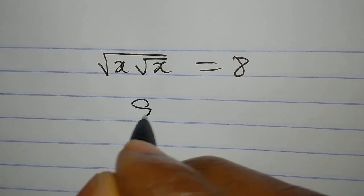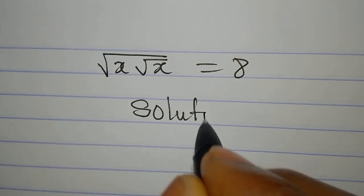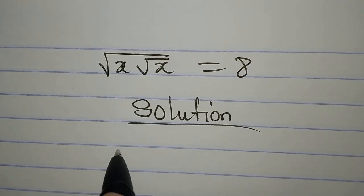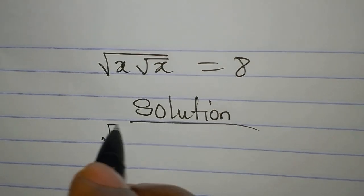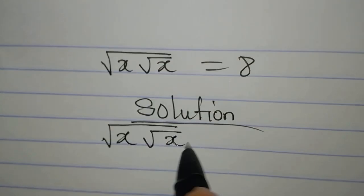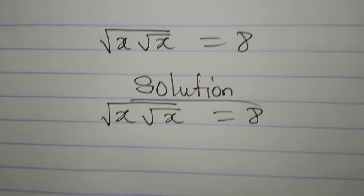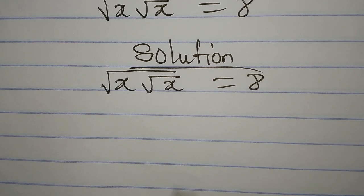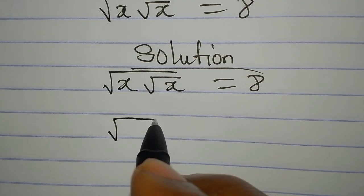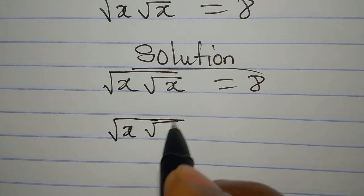Hello everyone, let's provide the solution to this problem: square root of x times square root of x equals 8. This is simple. The next thing we'll do is square both sides.